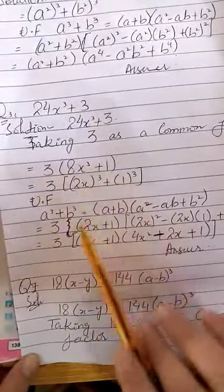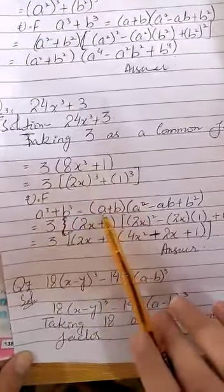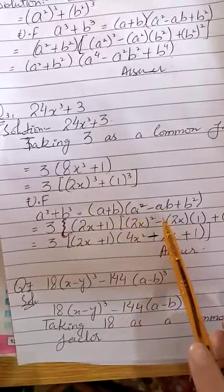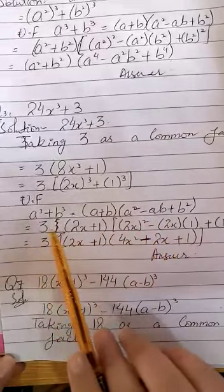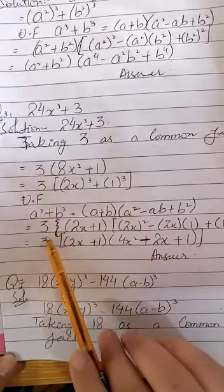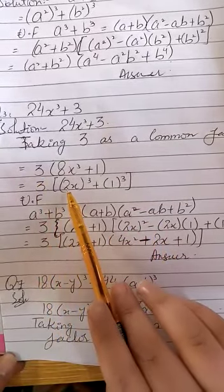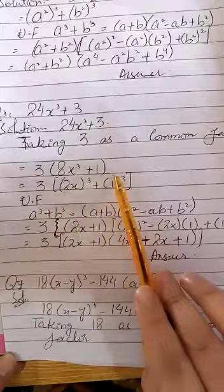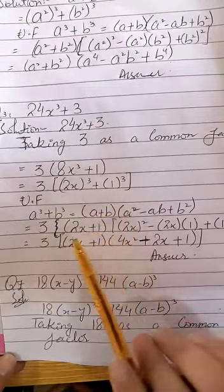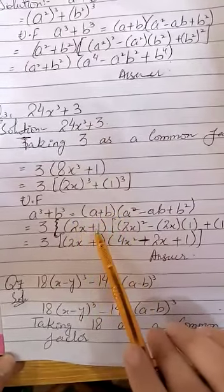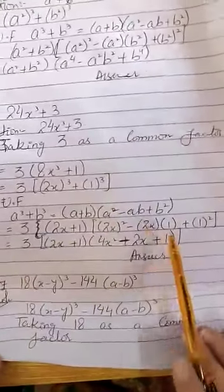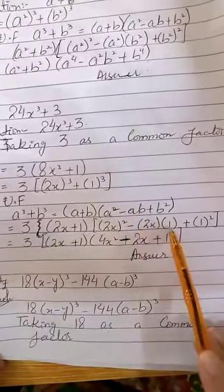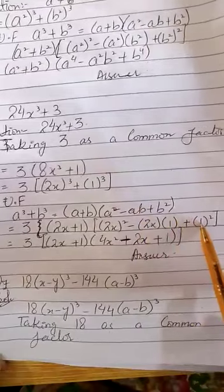So here again we have a formula formation A cube plus B cube, which equals A plus B into A square minus AB plus B square. Here we have A as 2x and B as 1. So A plus B means 2x plus 1. A square means square of 2x, and AB means 2x into 1, and B square means 1 square.